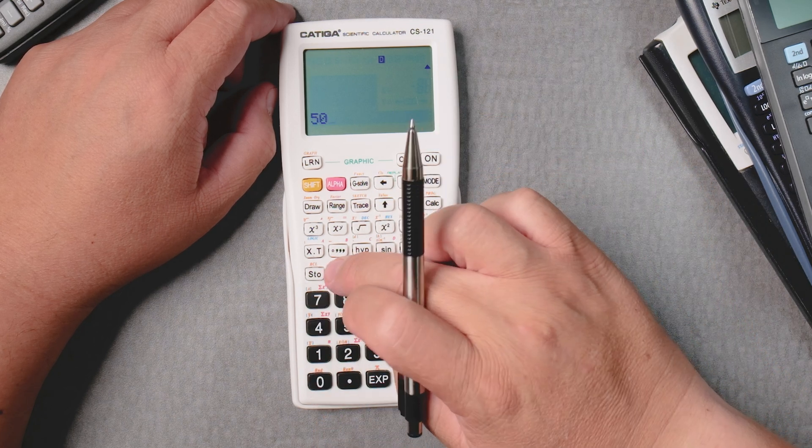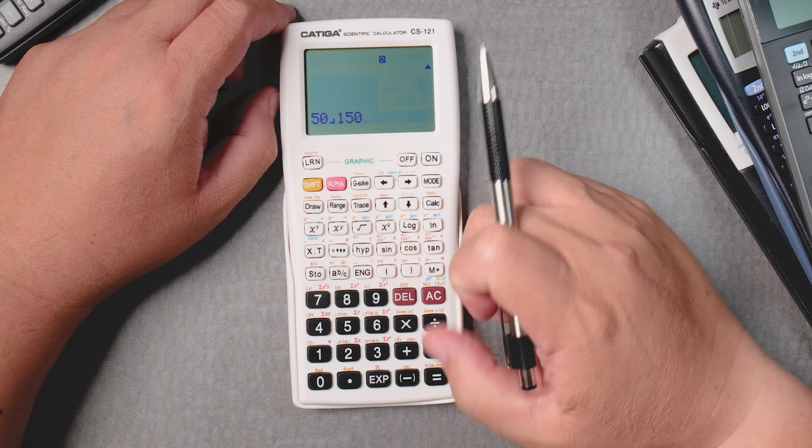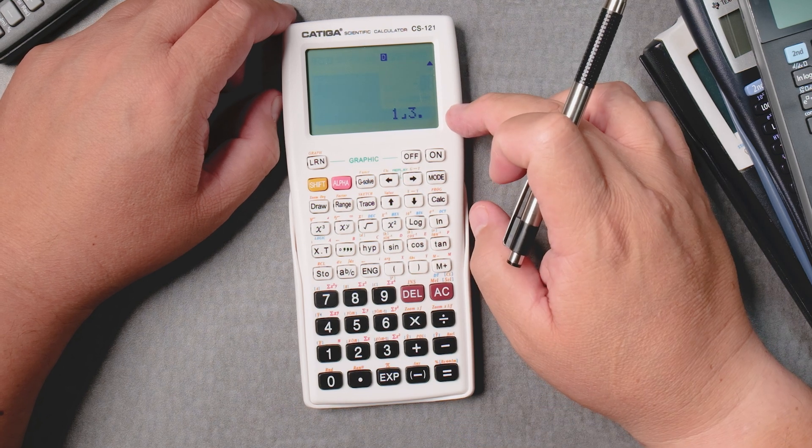Okay, let's say 50, ABC, 150. You want to reduce this. Press equals. It does it automatically for you.